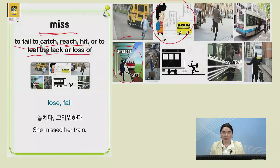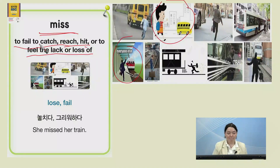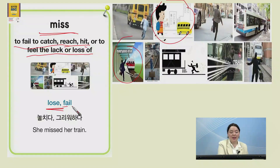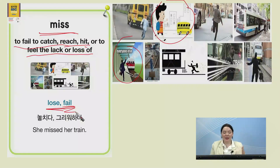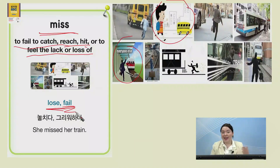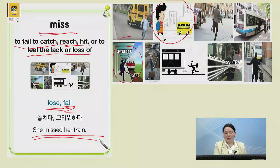Or miss means to feel the lack or loss of — 그 없는 걸 느껴지는 거예요. So usually we might miss a person or a time. For instance, you might miss your friend from elementary school — 그리워하다. So miss랑 비슷한 말은 lose — 놓치다, 잃어버리다 — or fail. So when you fail to get on the train, you miss the train. 타는 걸 실패했다. So that's when you miss something or miss out on something. She missed her train — 그 여자가 느려서 그 기차를 탈 수 없었다. She missed it. She couldn't get on it.